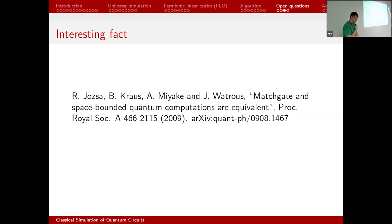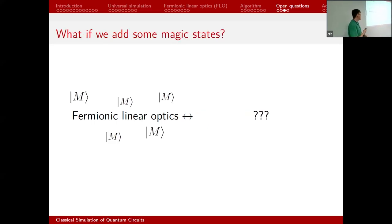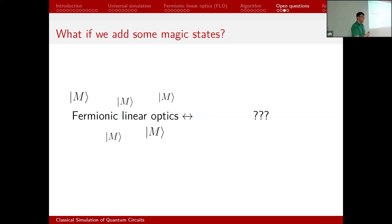Another open question: FLO and log-space-bounded quantum circuits are computation-equivalent (a result from 2009). An FLO circuit is equivalent to one with a logarithmic number of qubits. I want to know what happens to the right-hand side of this equation when I add magic states to FLO. Can I get something like: FLO plus magic equals log-space quantum circuits plus something natural? I think the correct answer is FLO plus magic is computation-equivalent to log-space quantum circuits plus extra qubits, but I don't know how to prove that.